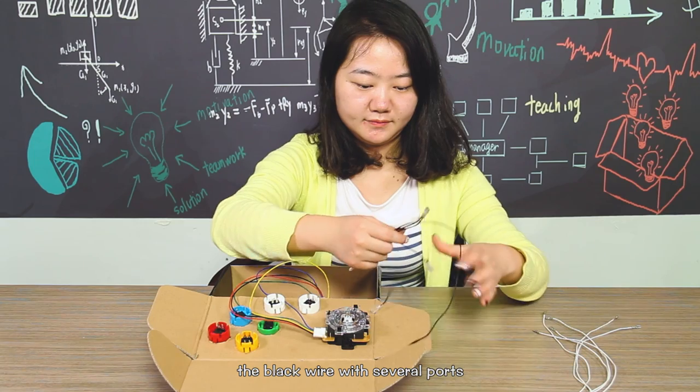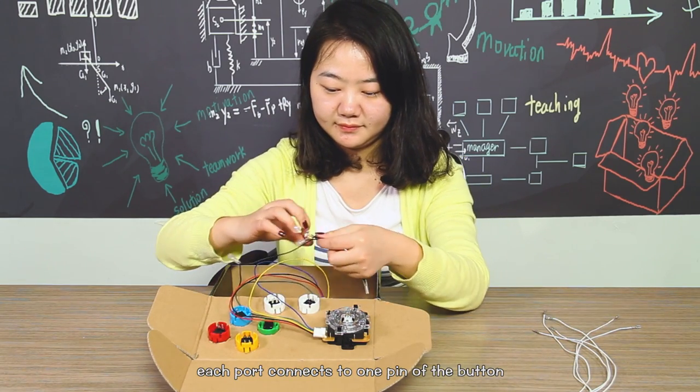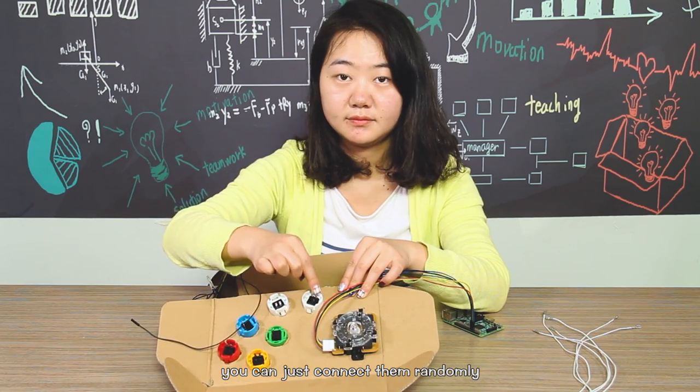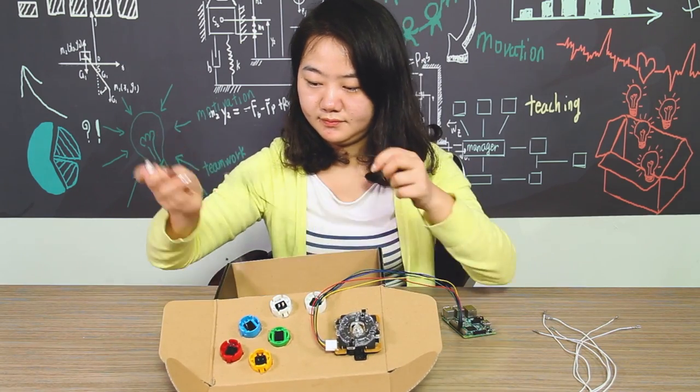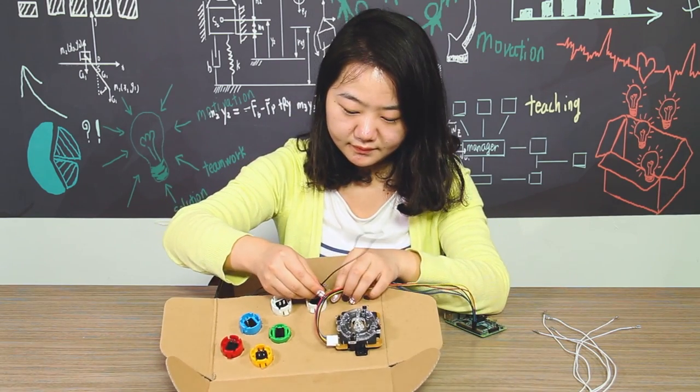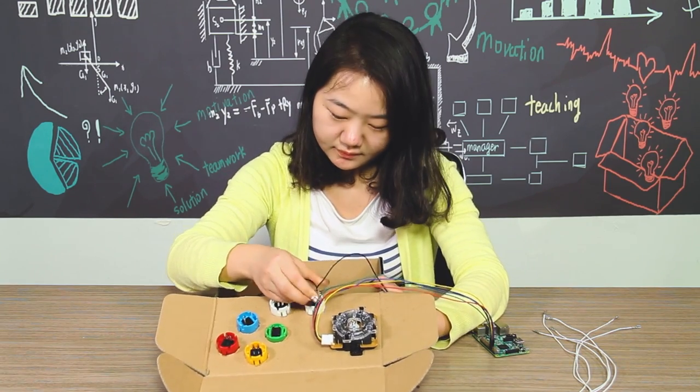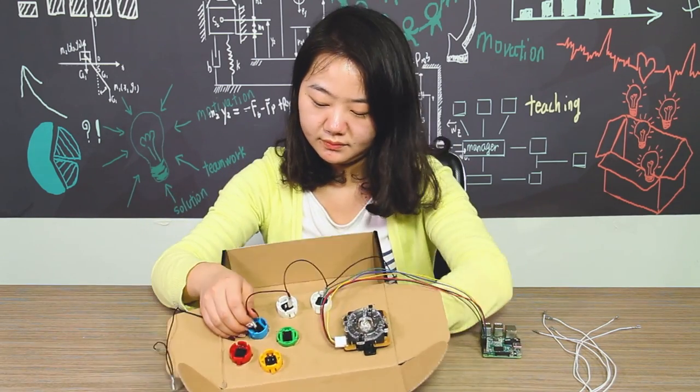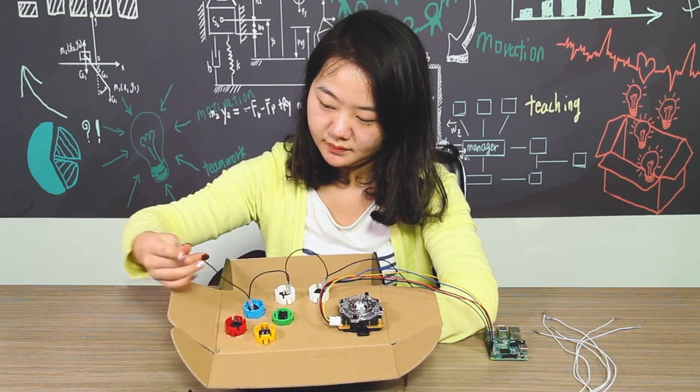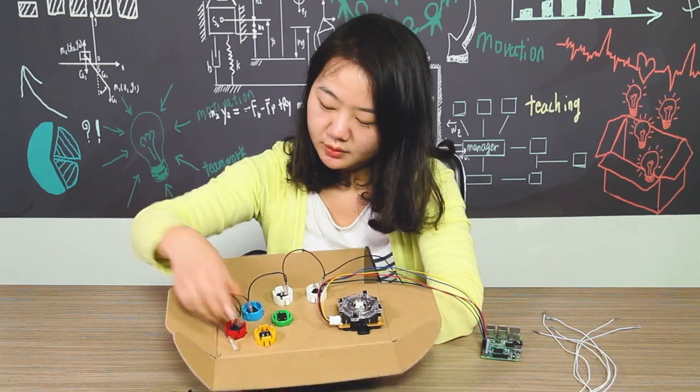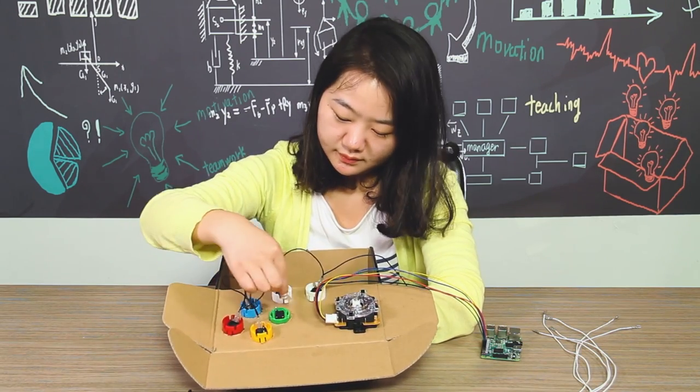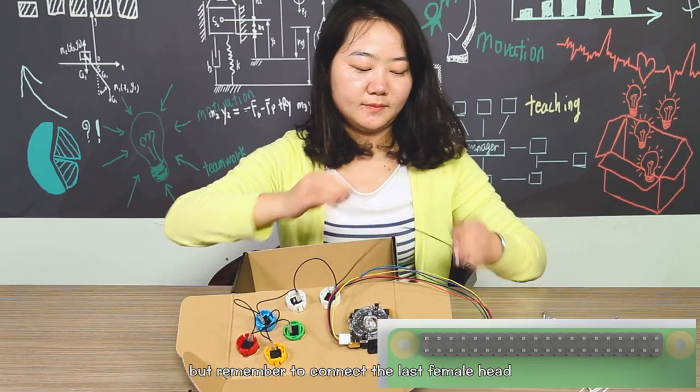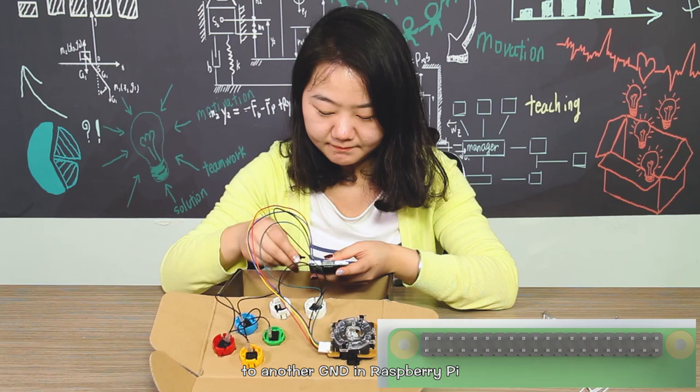Next, the black wire with several ports. Each port connects to one pin of the button and this wire connects all the buttons together. You can just connect them randomly. But remember to connect the last female head to another GND in Raspberry Pi.